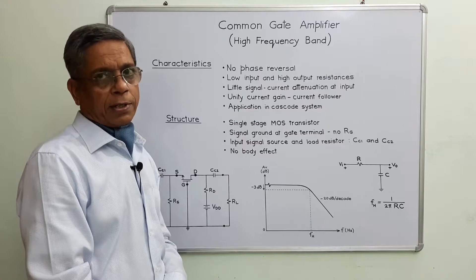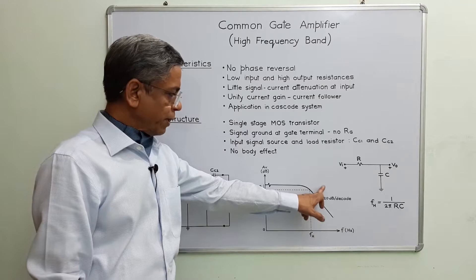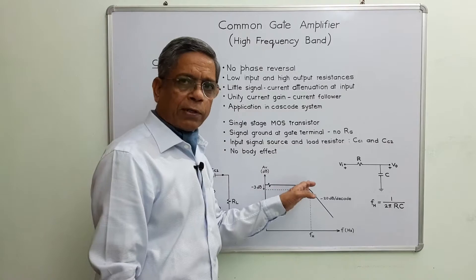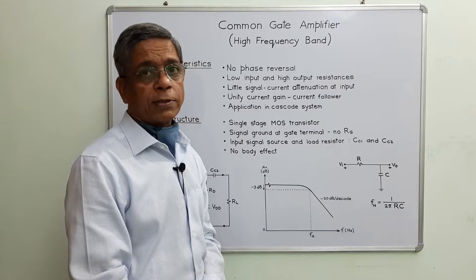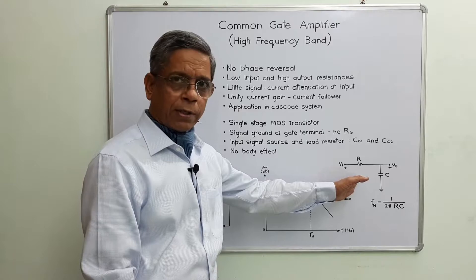At high frequency band, the coupling capacitors behave as short circuits, so there is no problem there. However, internal capacitors CGS and CGD don't behave as open circuits. Beyond the upper 3dB frequency, gain starts falling and the rate of attenuation is minus 20 dB per decade. At the upper 3dB frequency, the gain falls by 3dB. At high frequency band, the common gate amplifier behaves as a first order low pass network.